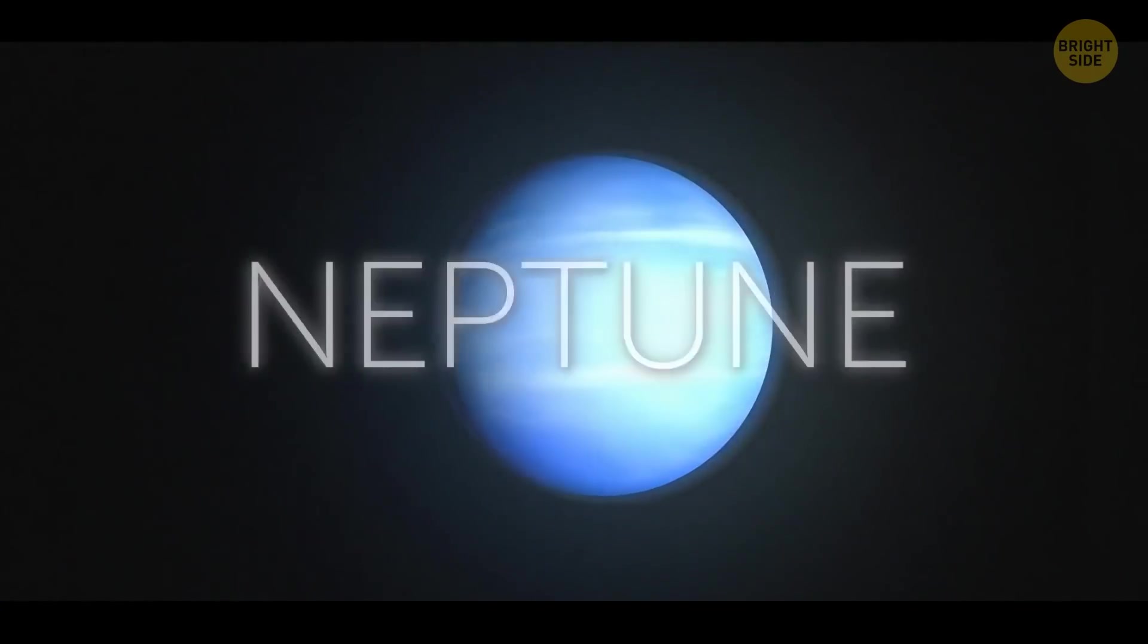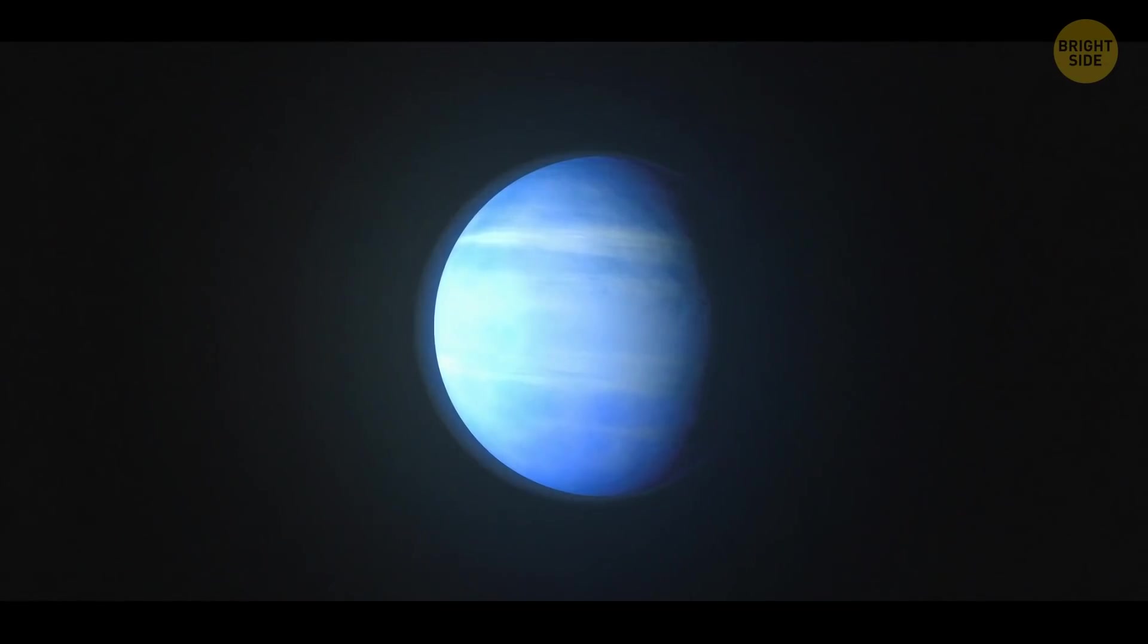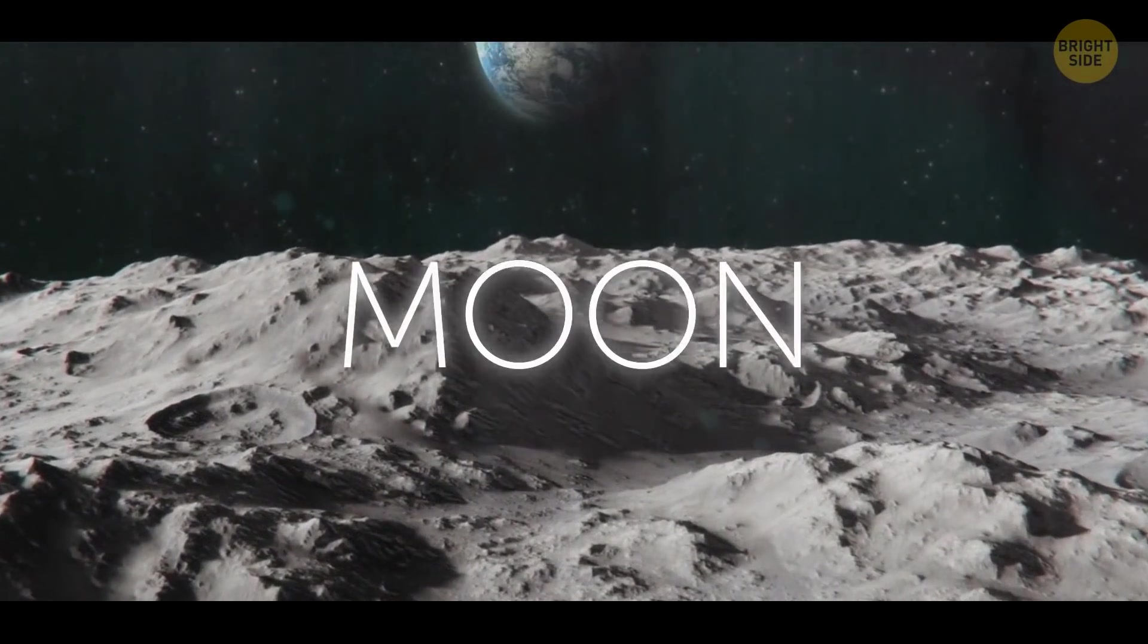Saturn, Uranus, and Neptune are all too far away for us to notice if they go missing. That just leaves one. No, not Pluto. What if the Moon disappeared?